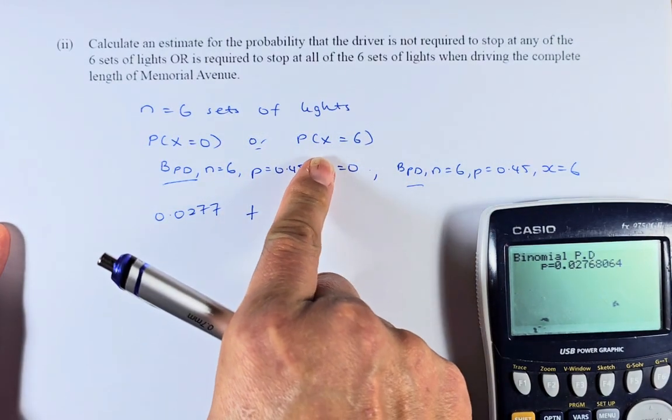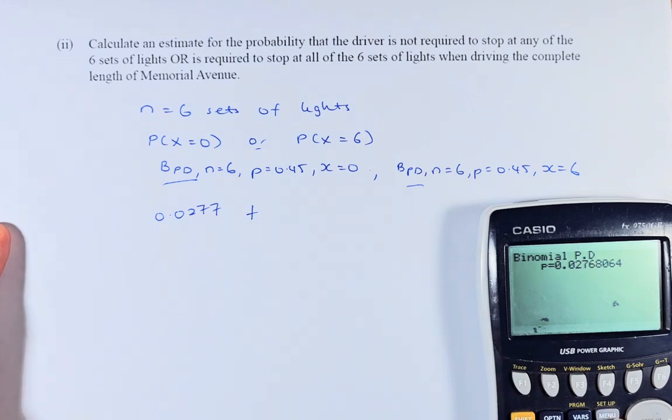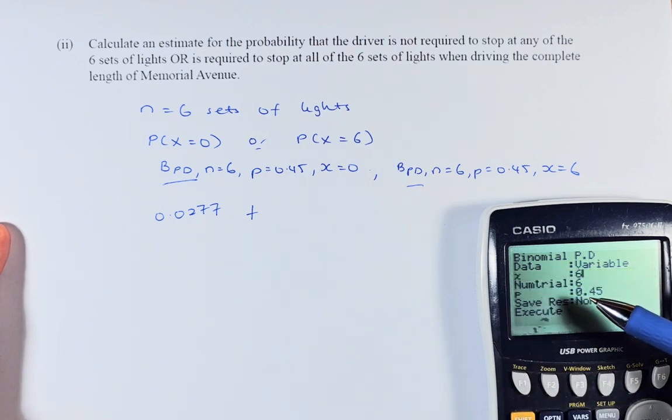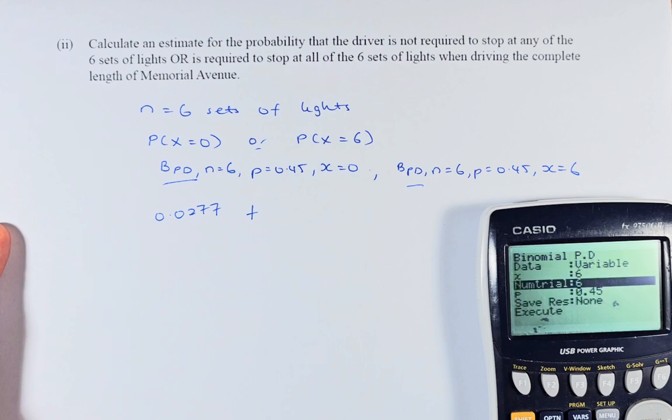Now you are going to calculate probability of x equal to 6. You are going to go back and exit. The same number. The only time that your x now instead of 0 is going to be 6. The number of trials is still 6. The probability is 0.45. Just press down, down, down. Execute, execute, execute.